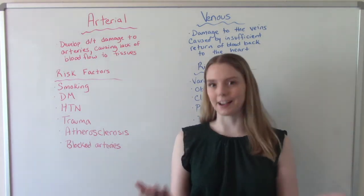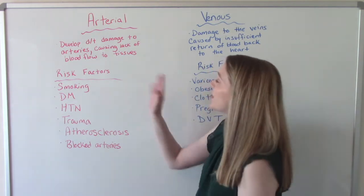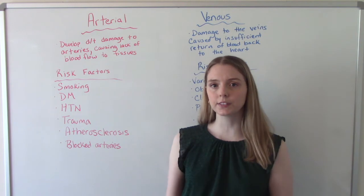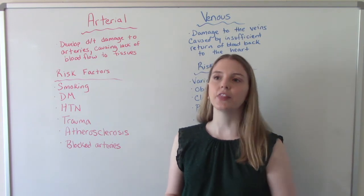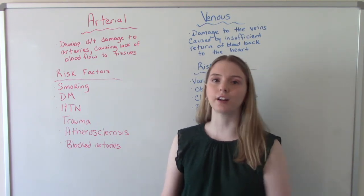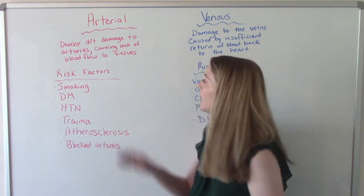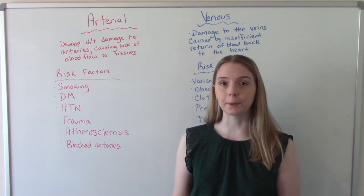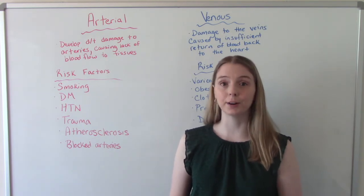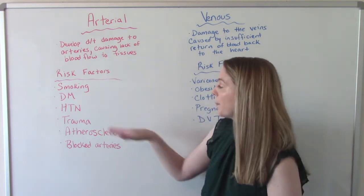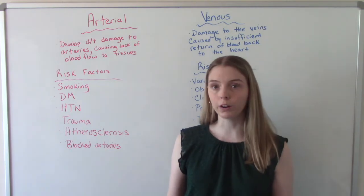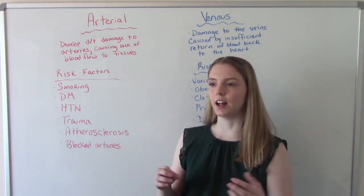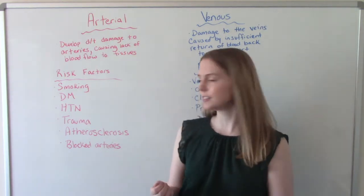Starting with arterial ulcers, they develop due to damage to the arteries — that makes sense, right. This causes a lack of blood flow to the tissues, so some sort of damage to the arteries occurs, then there's not enough blood, which means there's not enough oxygen going to that area. Risk factors include smoking and diabetes.